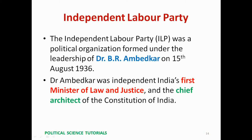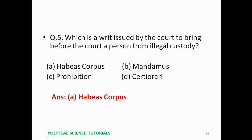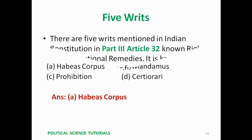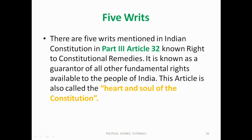Question 5: Which writ is issued by a court to bring before the court a person from illegal custody? Now we will discuss the five writs mentioned in the Indian Constitution. Part 3, Article 32, is known as the Right to Constitutional Remedies and is called the guarantor of all other fundamental rights available to the people of India.